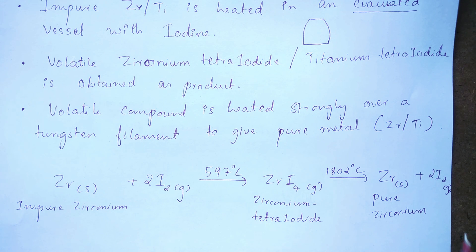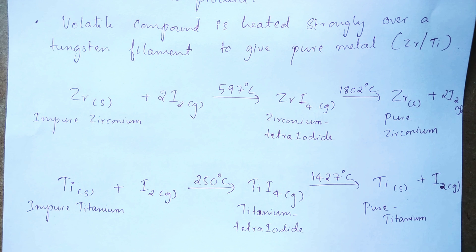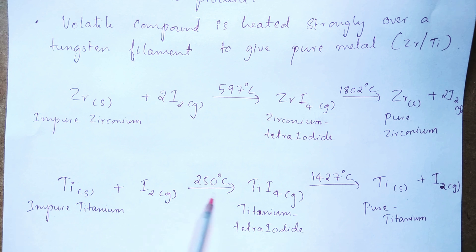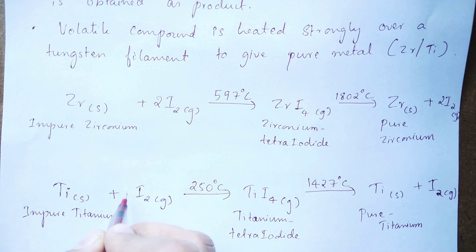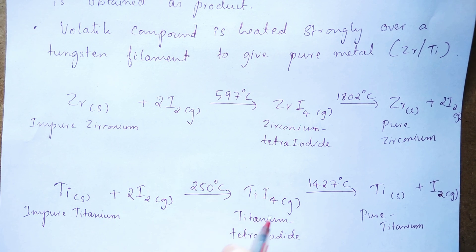To purify titanium, impure titanium solid is used instead of zirconium and the same reaction is repeated. Impure titanium is heated with iodine at 250 degree Celsius — a slightly lower temperature since the metal is different — producing titanium tetra iodide (TiI₄) gas as the product. The equation is balanced by putting 2 in front of TiI₄.